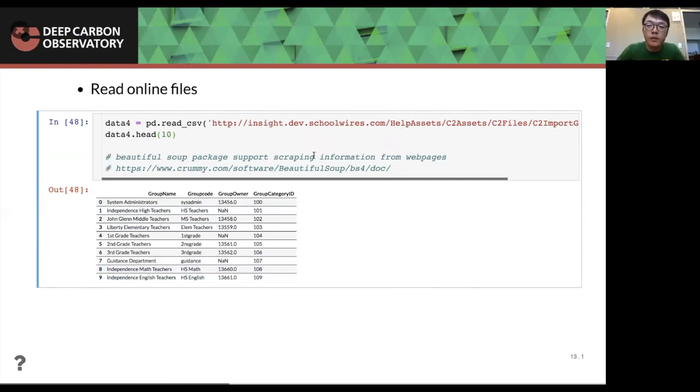And to scrap information from the web pages, we can use a package which called beautiful soup. And here is the link to the beautiful soup. And it will basically take the HTML file and taking the information you want from the HTML file. And return into data, into a table where you can save, but I'm not going into too much detail in this webinar.